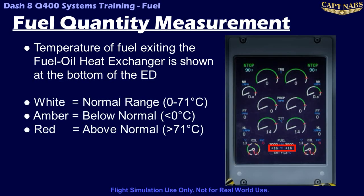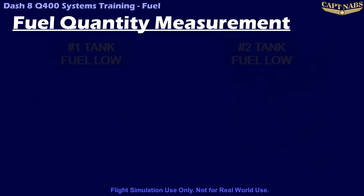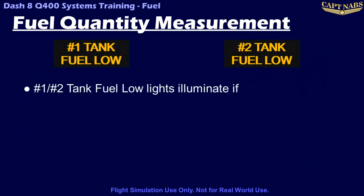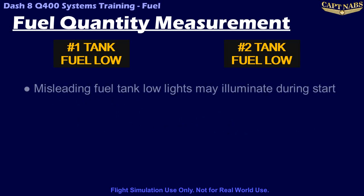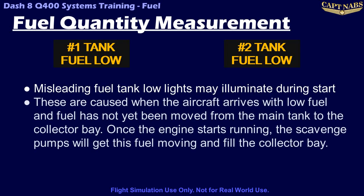The fuel oil heat exchanger outlet temperature is normally displayed in white, but changes to yellow or red if the temperature is outside of limits. A number one or number two tank fuel low caution light will come on any time the parking brake is off, the corresponding engine is operating, and the corresponding collector bay has a fuel level below approximately 305 pounds. Note that it is possible to get spurious tank fuel low caution lights during the engine start process. These may be ignored and usually occur when the airplane has arrived at the gate with a fairly low fuel level, less than 1,000 pounds per wing.